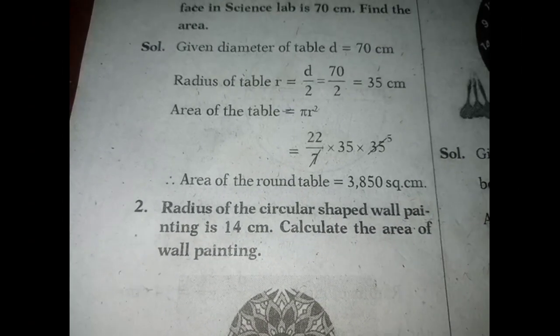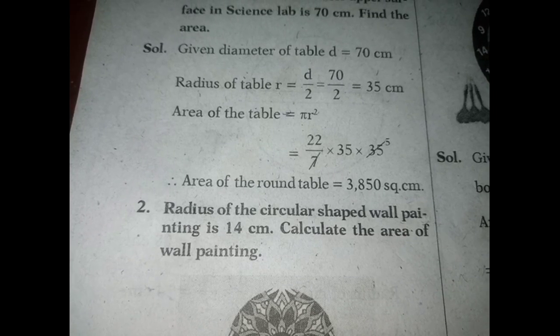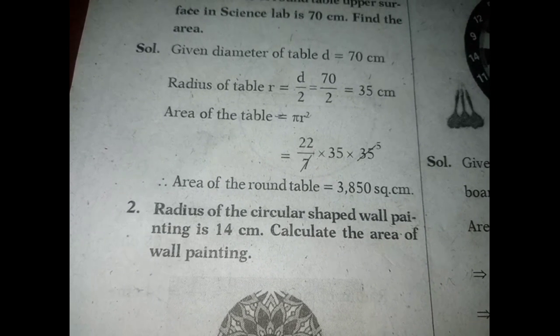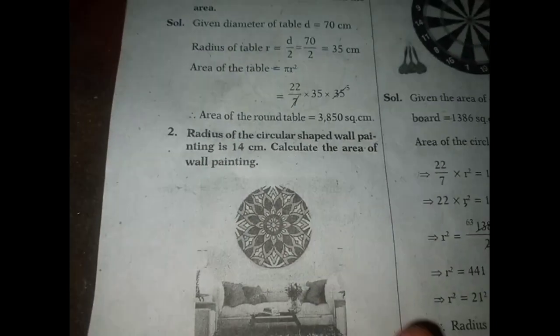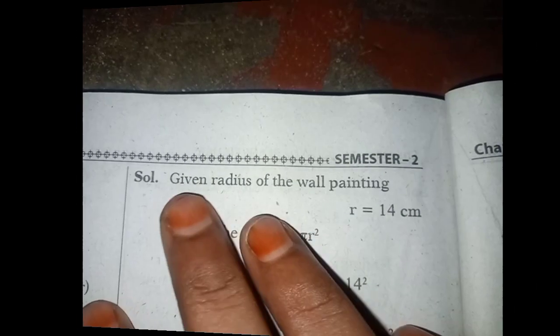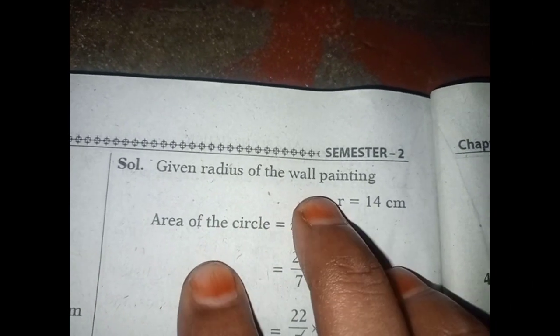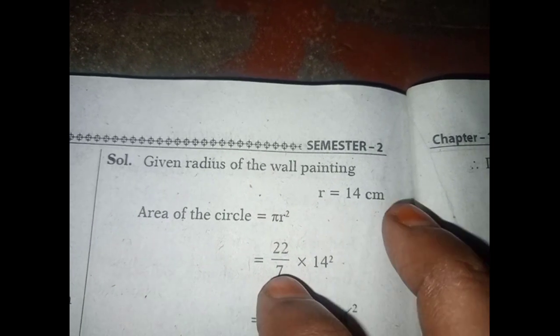Radius of the circular shaped wall painting is 14 cm. Calculate the area of wall painting. Solution: given radius of the wall painting r equals 14 cm.